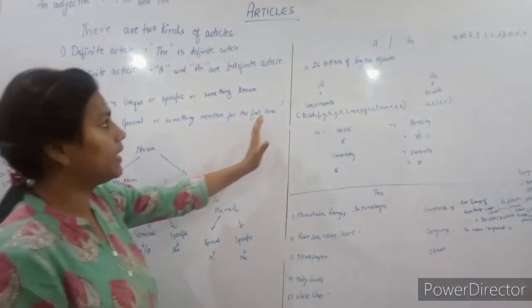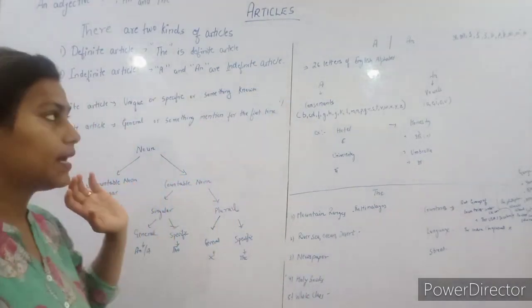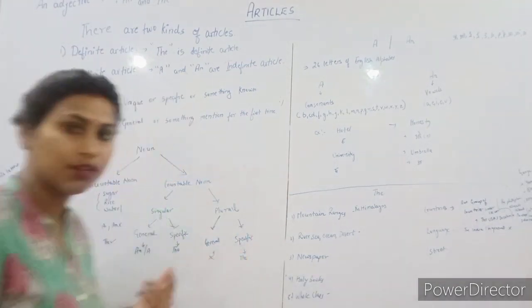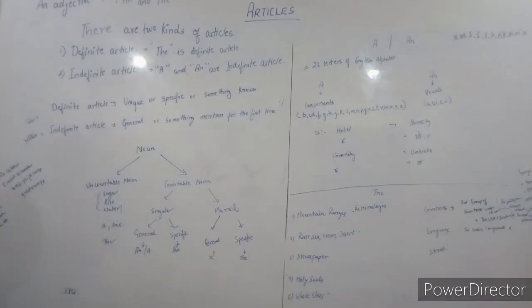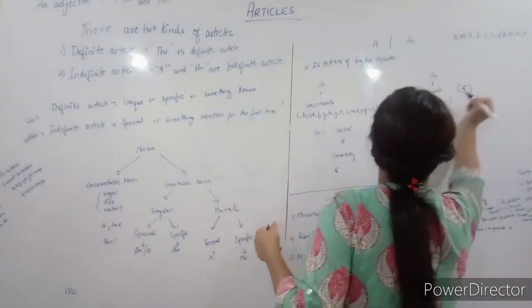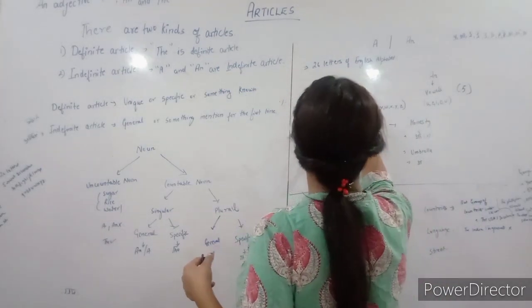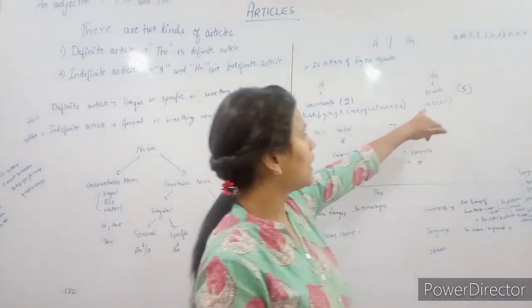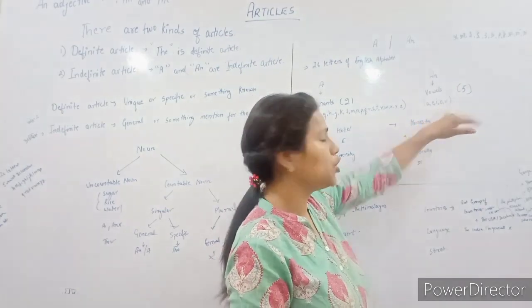First, you need to know that we have 26 letters in the English alphabet, in which we have 5 vowels and 21 consonants. The vowels are: A, E, I, O, U.